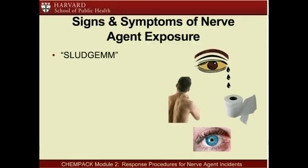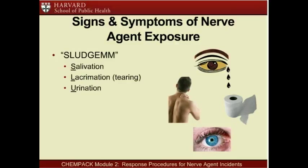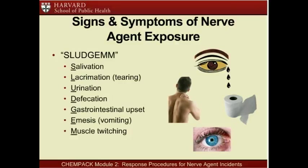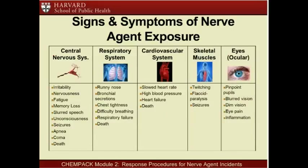The acronym SLUDGEM can be used to remember the signs and symptoms of nerve agent exposure. Someone who has been exposed to a nerve agent, such as an organophosphate pesticide, will likely exhibit several of the following symptoms: Salivation, Lacrimation (or tearing), Involuntary urination or defecation, Gastrointestinal upset, Emesis (or vomiting), Muscle twitching, and Miosis (or pinpoint pupils). Exposure to nerve agents has the potential to affect the central nervous system, respiratory system, cardiovascular system, skeletal muscles, and eyes.